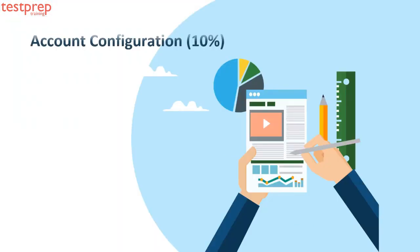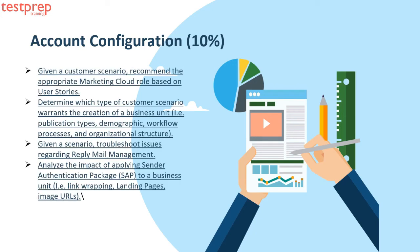Number three: Account Configuration. It contains — first, given a customer scenario, recommend the appropriate Marketing Cloud role based on user stories. Second, determine which type of customer scenario warrants the creation of a business unit, based on publication types, demographic workflow processes, and organizational structure. Third, given a scenario, troubleshoot issues regarding Reply Mail Management.